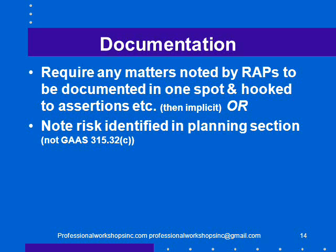If you identify the risks in the planning section, there's a really good argument that's not GAAS, because GAAS in 315 32C says you have to link risks identified to assertions to procedures so that we can document what we've done properly. Identifying risks randomly throughout the file is A, not in accordance with standards, and B, probably a really bad idea because we might then not do work to deal with that risk.